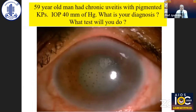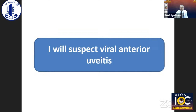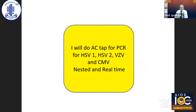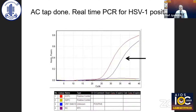This is a 59-year-old man with pigmented keratic precipitates and very high intraocular pressure. The suspicion of raised IOP with pigmented KPs indicates a possible etiology of viral anterior uveitis. For virus-covered conditions, we need to do PCR on AC tap for HSV-1, HSV-2, VZV, and CMV — both nested and real-time. The real-time PCR was positive for HSV-1 in this case, and the patient responded to antiviral treatment.